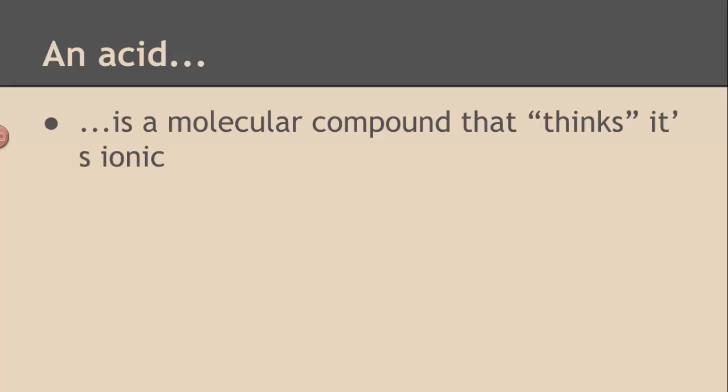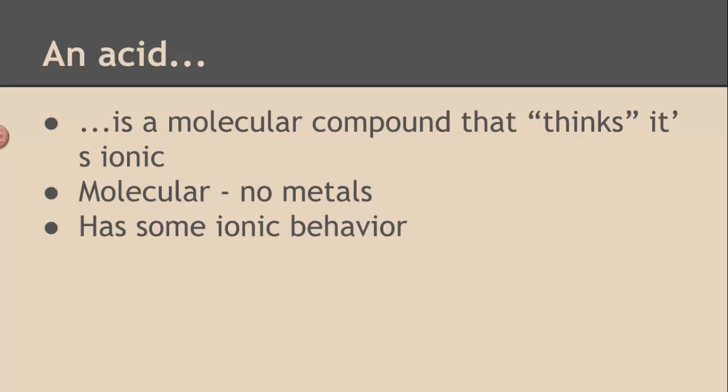To start with, what is an acid? An acid is a molecular compound that thinks it's ionic. That means it's molecular, which means it doesn't contain any metals. And truly it's not really made of ions either, but it does behave in an ionic fashion.